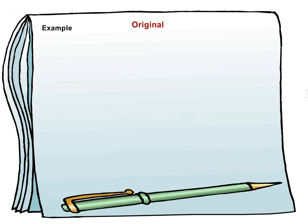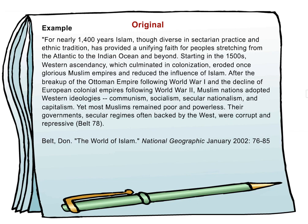Example. For nearly 1400 years, Islam, though diverse in sectarian practice and ethnic tradition, has provided a unifying faith for peoples stretching from the Atlantic to the Indian Ocean and beyond. Starting in the 1500s, Western ascendancy, which culminated in colonization, eroded once glorious Muslim empires and reduced the influence of Islam. After the breakup of the Ottoman Empire following World War I and the decline of the European colonial empires following World War II, Muslim nations adopted Western ideologies — communism, socialism, secular nationalism, and capitalism. Yet most Muslims remained poor and powerless. Their governments, secular regimes often backed by the West, were corrupt and repressive.